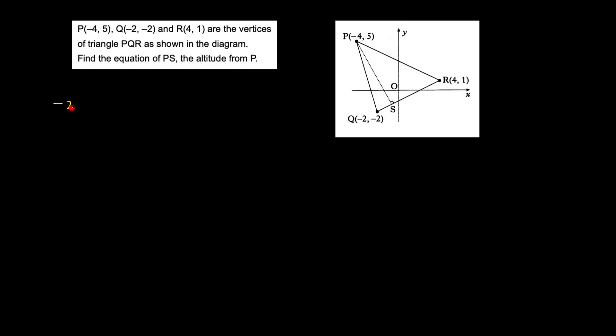Now what I'm going to do, I'll just write the points here. So that's my Q and this is my point R, which is (4, 1). I'll call this x1, y1, x2, y2.